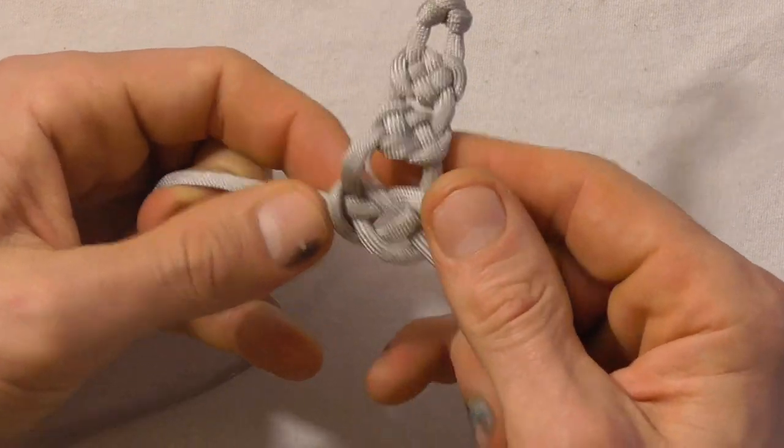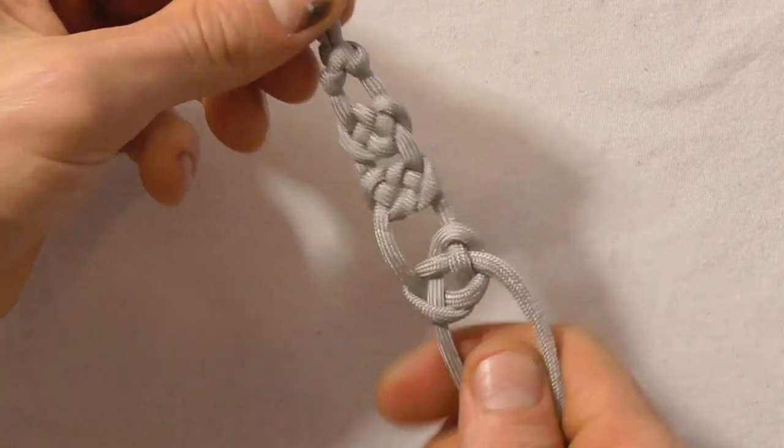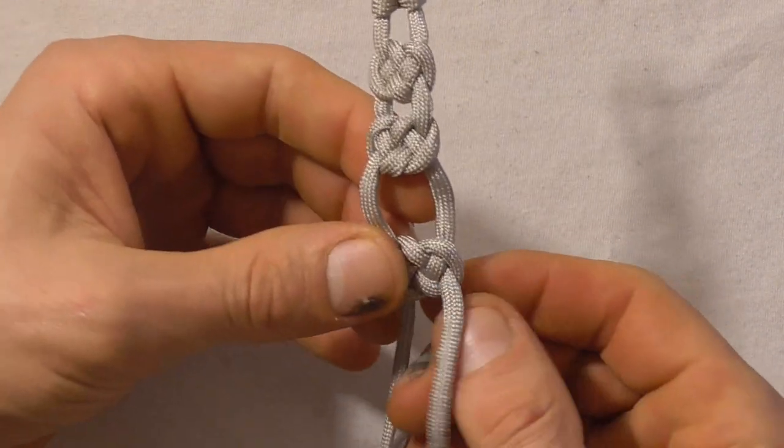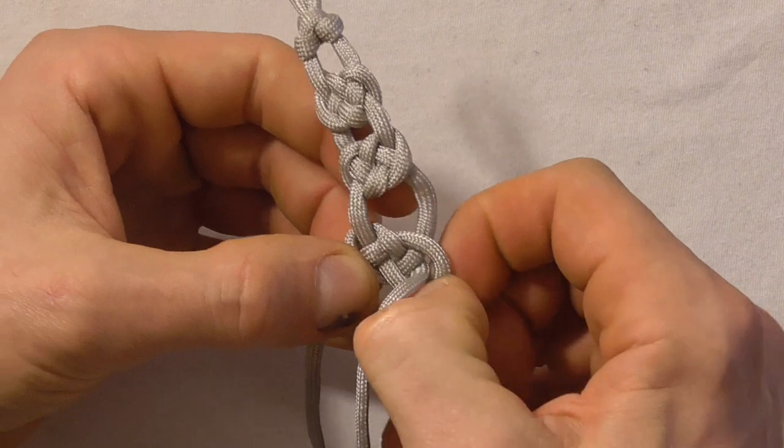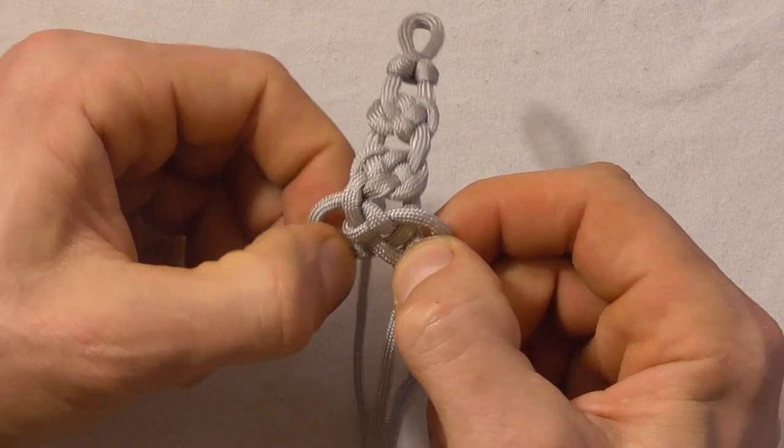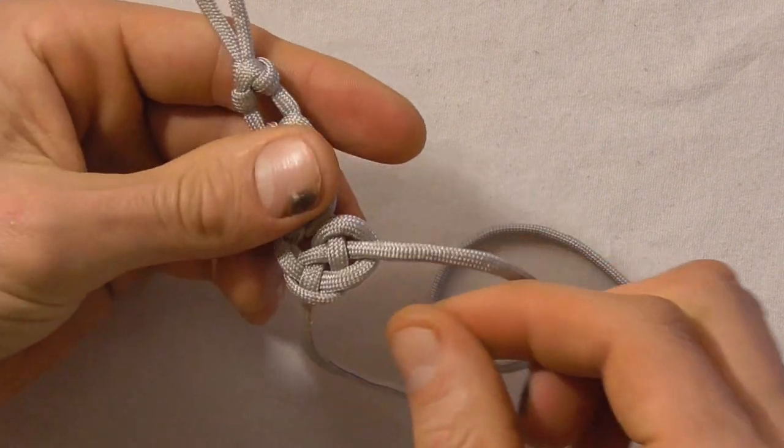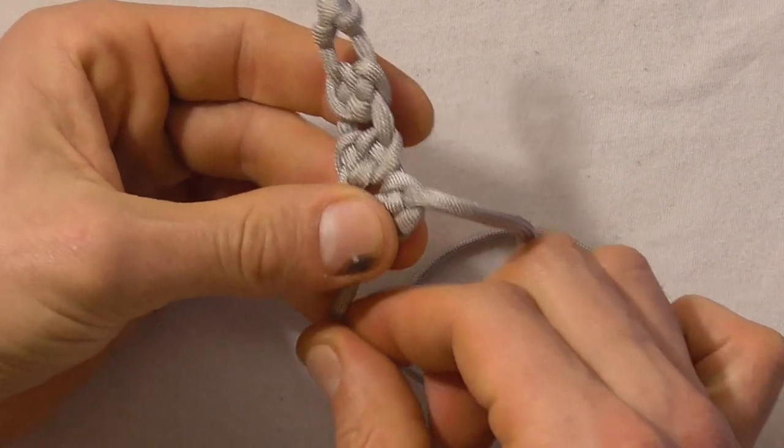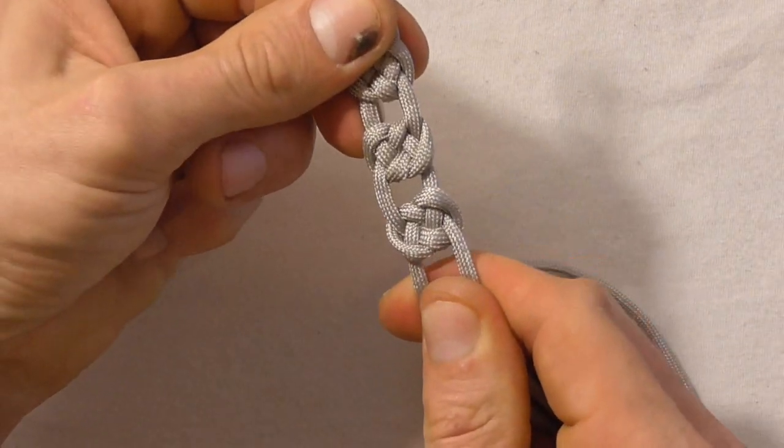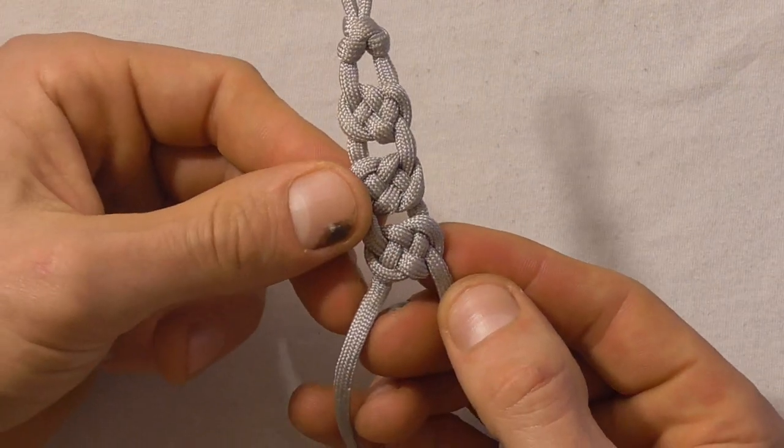Again tighten up the knot. Grab the top loop, give it a good hard yank. And then again adjust these legs, just so that the leg lengths are equal in between each knot. So that's our third one.